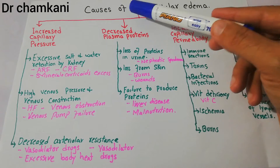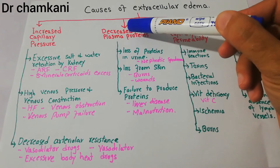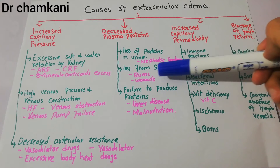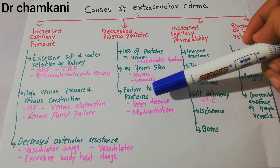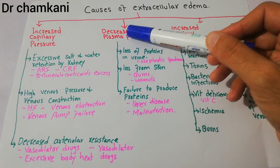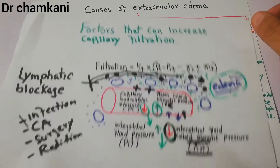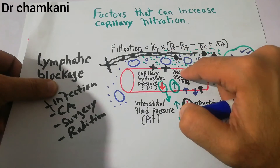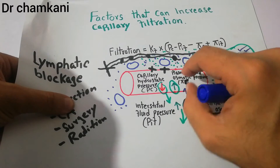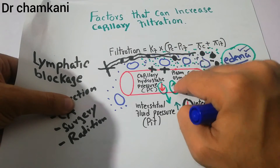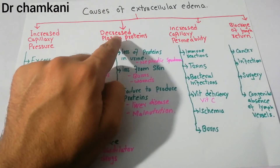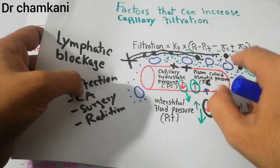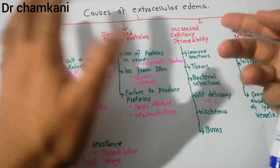Another cause of extracellular edema is decreased plasma proteins. This can occur due to loss of proteins in urine as in nephrotic syndrome, loss of proteins from skin as in burns or wounds, and failure to produce proteins as in liver cirrhosis or malnutrition. Plasma colloid osmotic pressure normally pulls fluid from the interstitium into the capillary, so decreased plasma protein reduces this pulling force and fluid accumulates in the interstitium, causing edema.